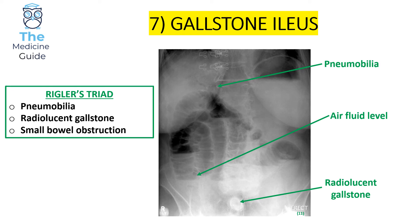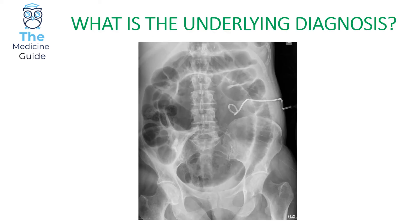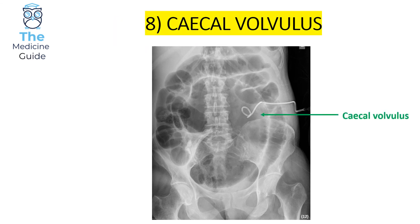Let's have a look at the next image. This is an example of a caecal volvulus. It's really important that you're able to distinguish between a sigmoid volvulus and a caecal volvulus, because these are two very typical exam questions that crop up time and time again in SBAs and clinical OSCE abdominal x-ray imaging stations. Please keep yourself familiar with both types of volvulus.